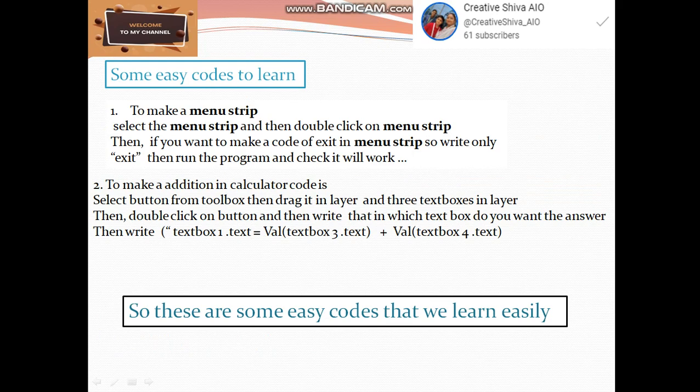Second, how to make an addition code in calculator. The code is: Select button and three text boxes from toolbox and drag it in layer. Then, double click on button and then write that in which text box do you want the answer. As example, I want example in text box 1.